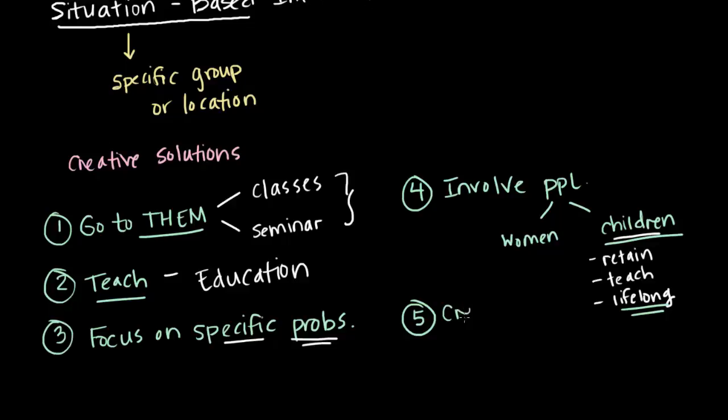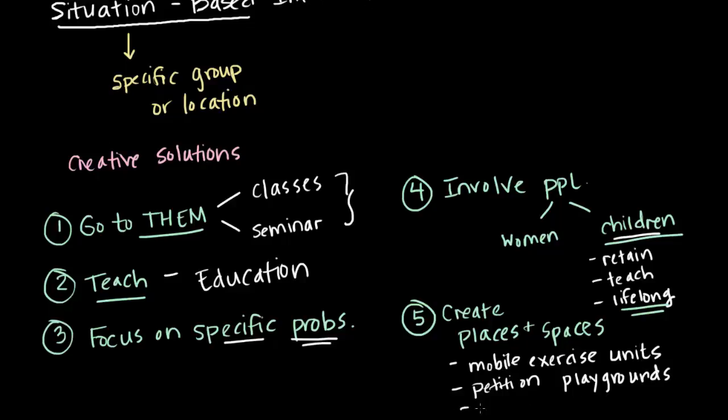And finally, you need to create places and spaces where people can actually have these interventions. Now, on the AAMC website, you'll see that there's a lecture by Dr. America Bracco called Health Disparities in Healthy Cities. And one of the things that she talks about is a community in Santa Ana, California, that doesn't have parks or playgrounds. So she brings mobile exercise units to that area. Now, that's a very specific example of executing this. But there are other things that you can do. You can petition for things that are needed, playgrounds or parks. You can create safe spaces for kids to do homework after school or to gather with others. But you need to make a place and a space where people can actually carry out these interventions.